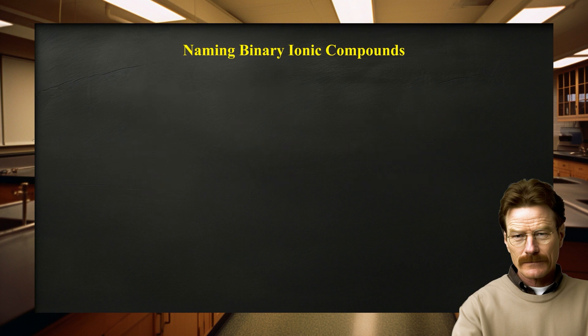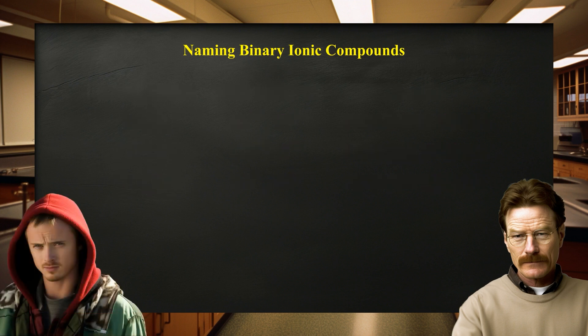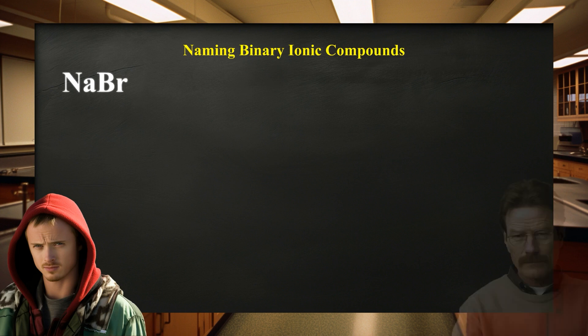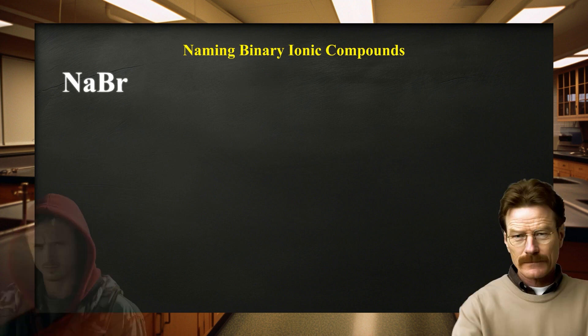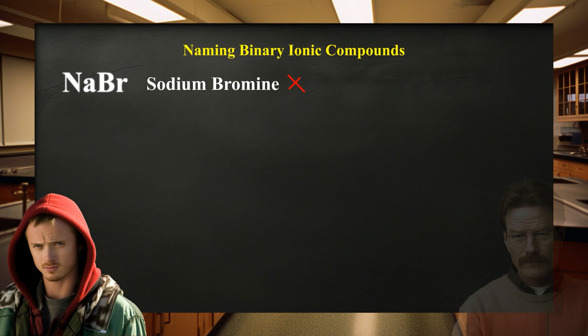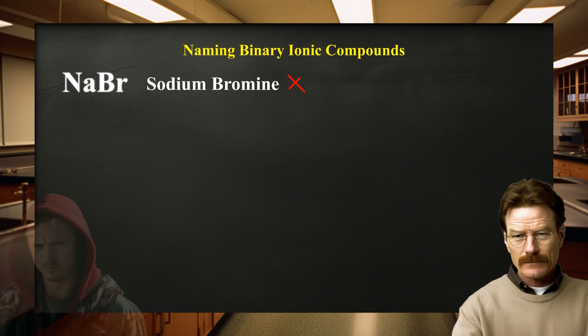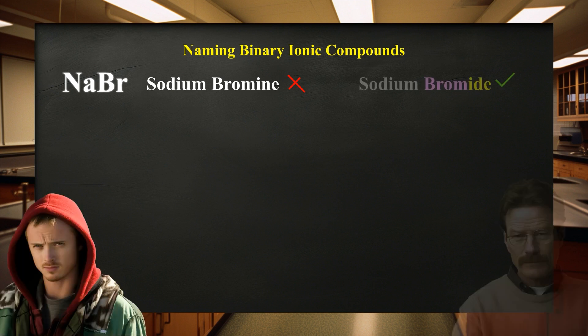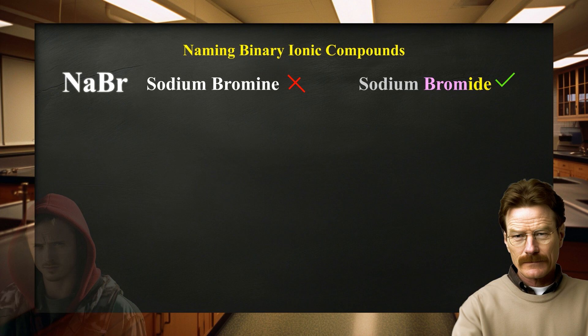Let's try some examples. Jesse, how would you name NaBr? — Is it just N-A-B-R? — Not quite. Remember we need to name the metal first, followed by the name of the nonmetal. — So is it sodium bromine? — Almost. Remember we need to change the ending of the nonmetal to -ide. — So it's called sodium bromide? — Nicely done, Jesse.